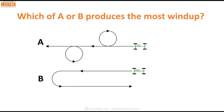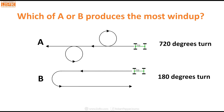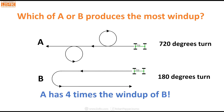Which of these produces the most wind-up — A or B? The answer is A. Scenario A goes through 720 degrees of total turn, B goes through 180 degrees. Critically, the 360 degrees one way does not cancel out 360 degrees the other way, so we actually get four times the amount of wind-up with A compared to B.